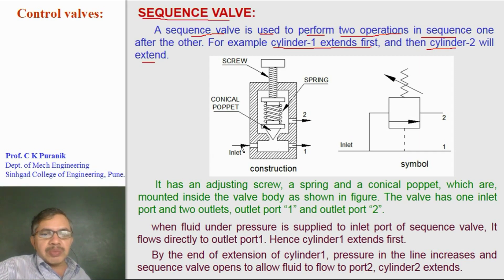It has an inlet port, and outlet port 1 is directly connected to the inlet port, and outlet port 2 is connected through the conical poppet. If conical poppet lifts, then only oil can flow to 2. This is symbolic representation of sequence valve. Inlet, outlet port 1, outlet port 2.